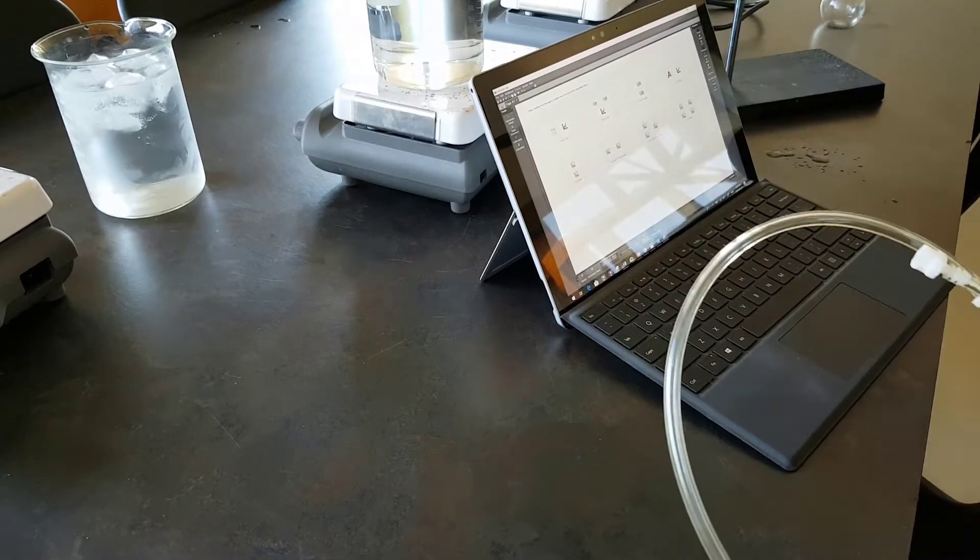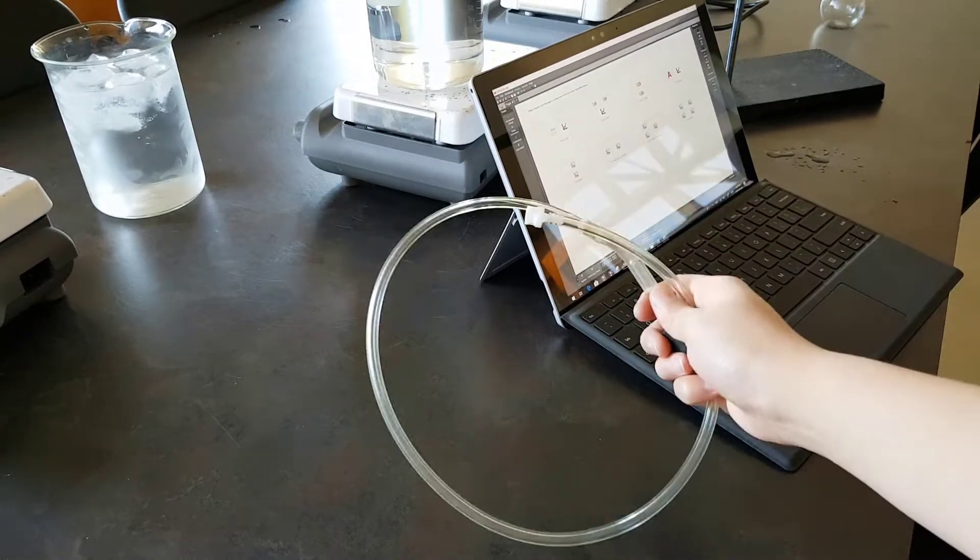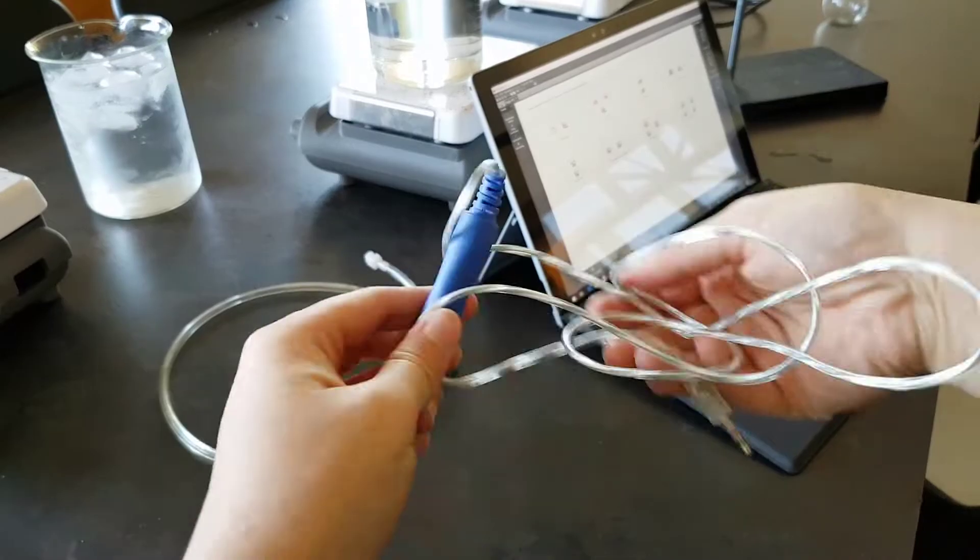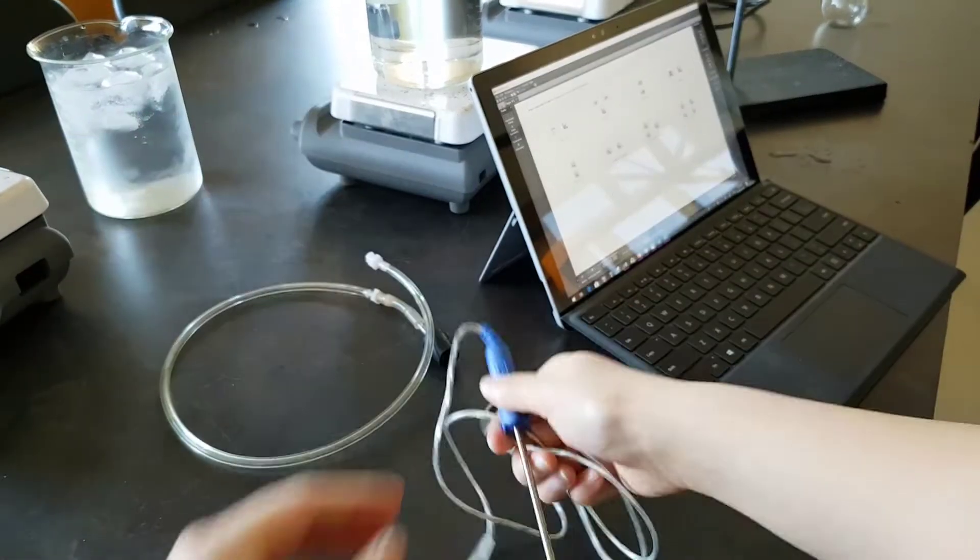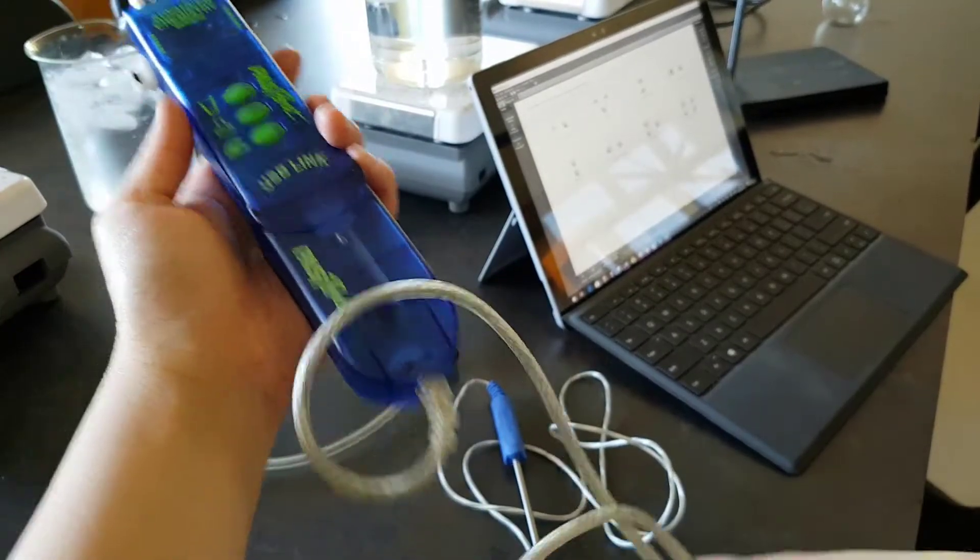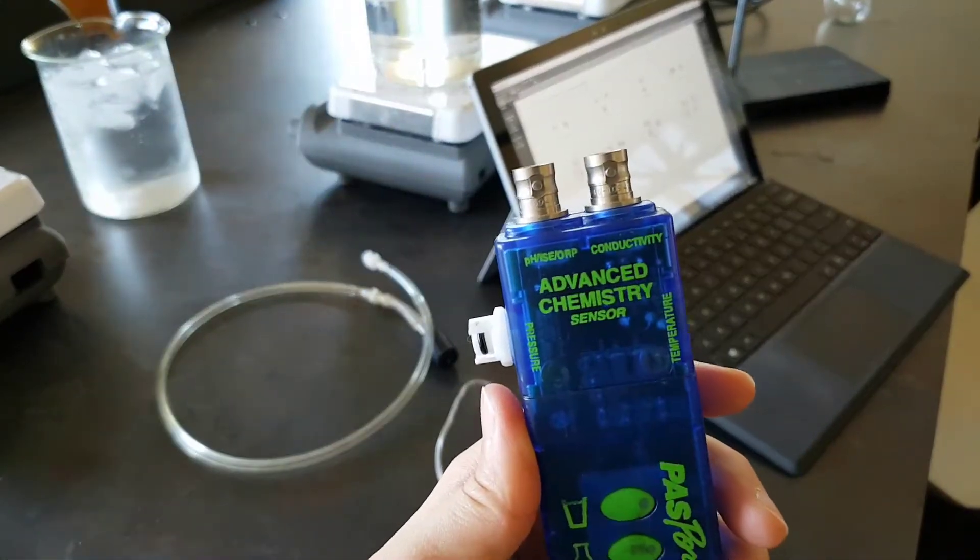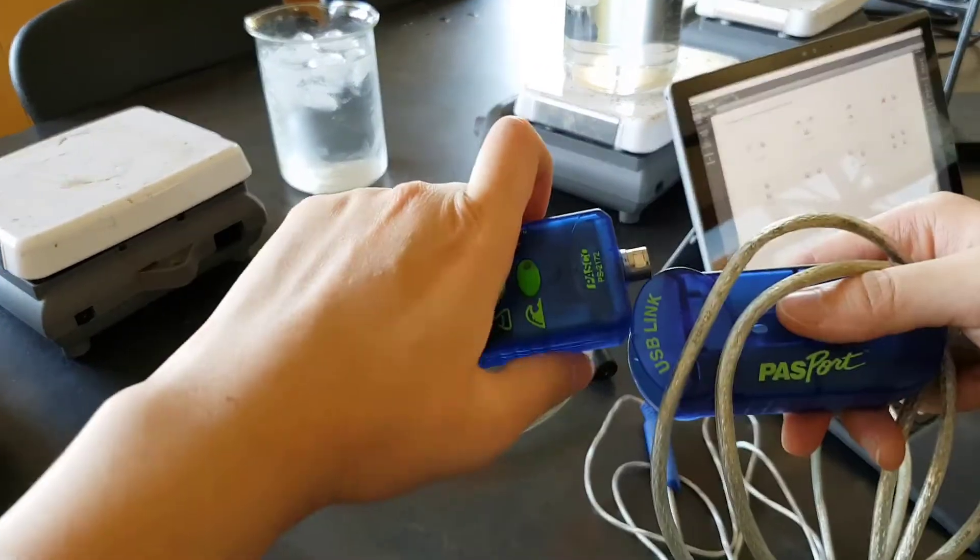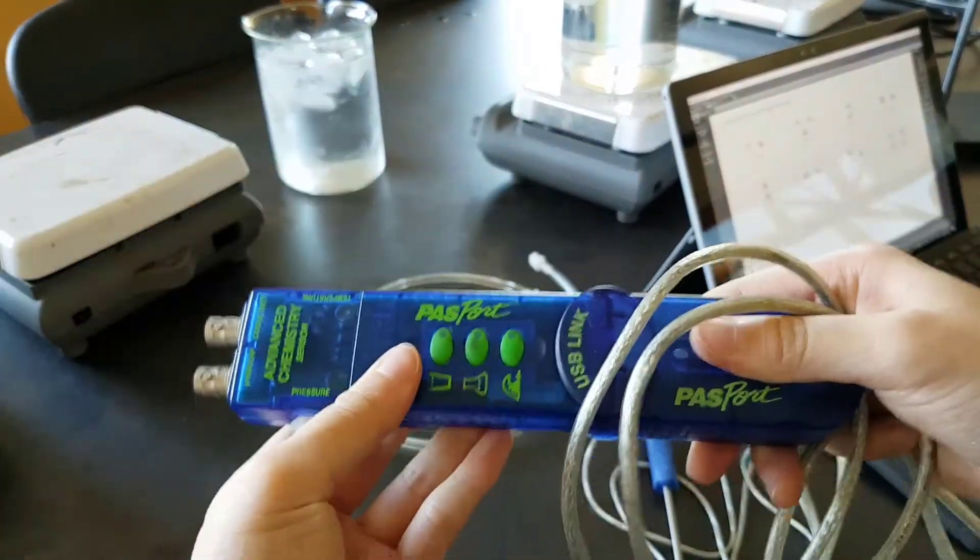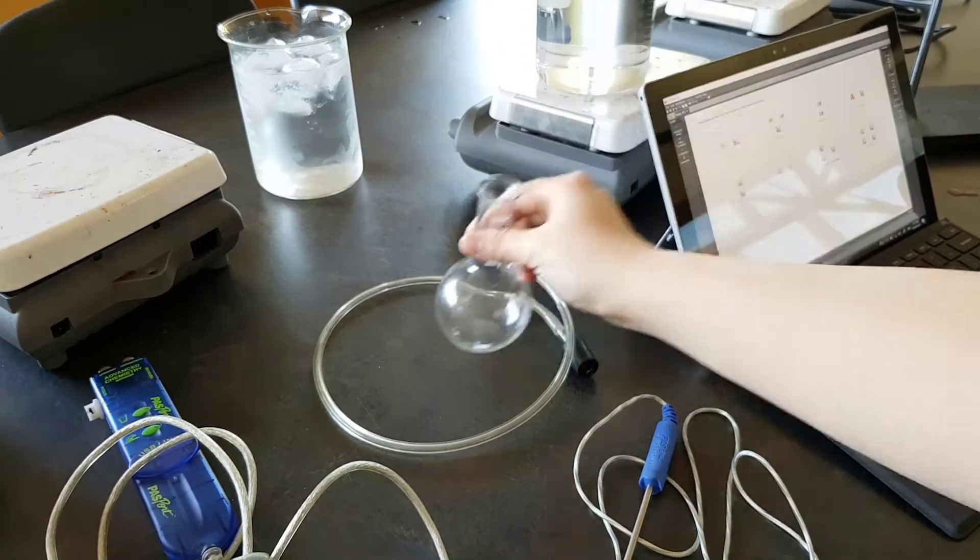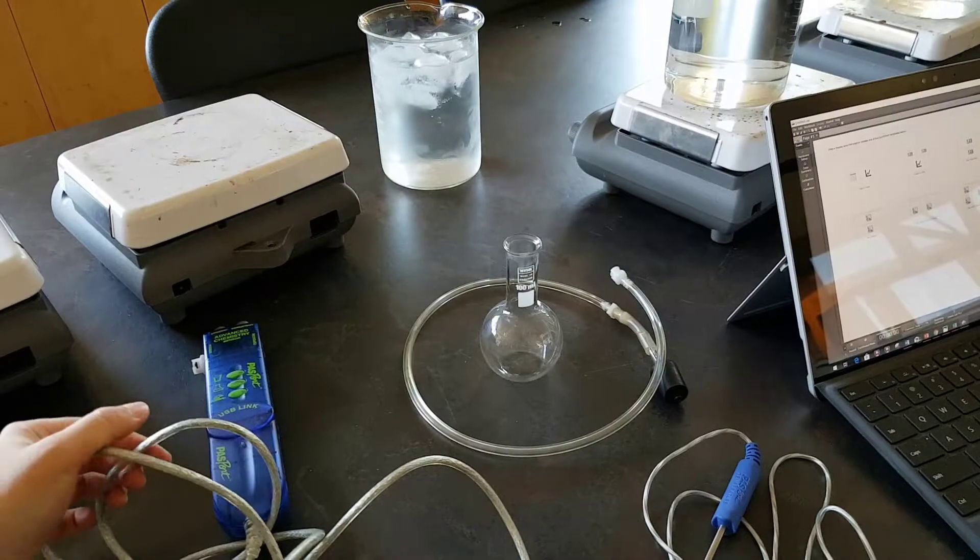First, you'll need a wiring tubing connecting you to your flask and your pressure sensor. Here we have a thermometer temperature sensor, and here we have a general connectivity that connects all your sensors here, including pressure and temperature, as well as the USB link that connects all of your data to a laptop. Last but not least, you have a 100 mL volumetric flask.